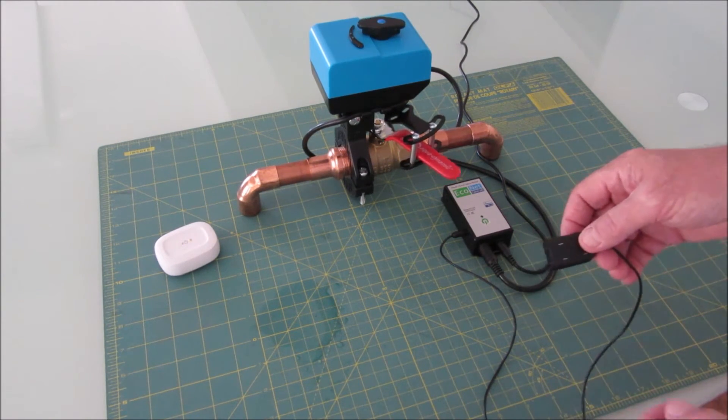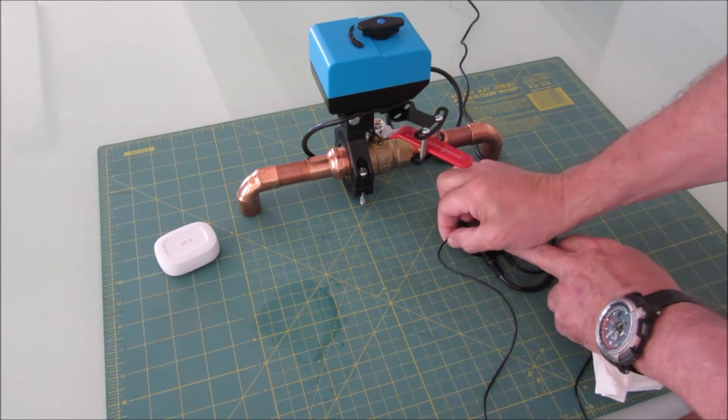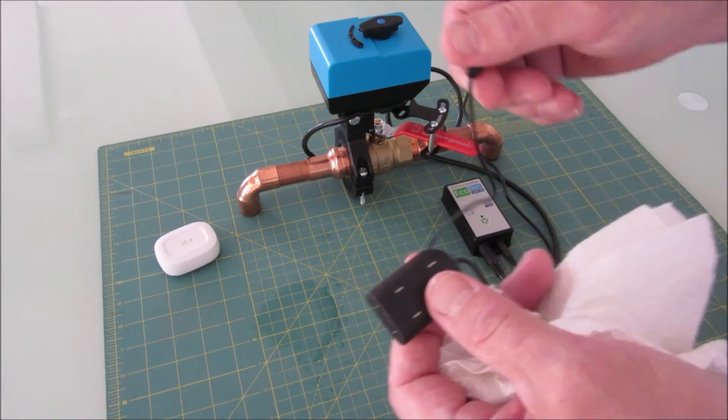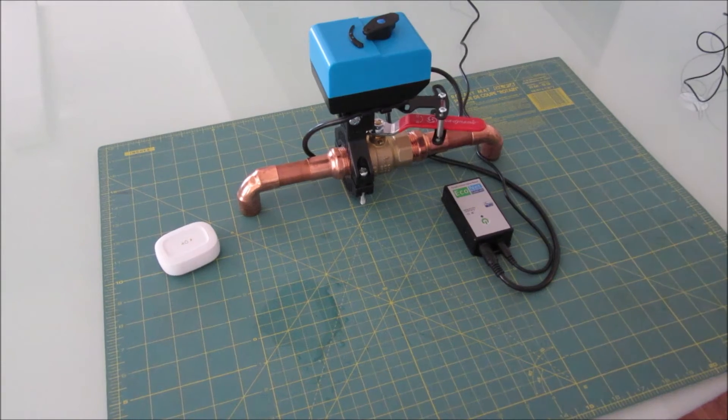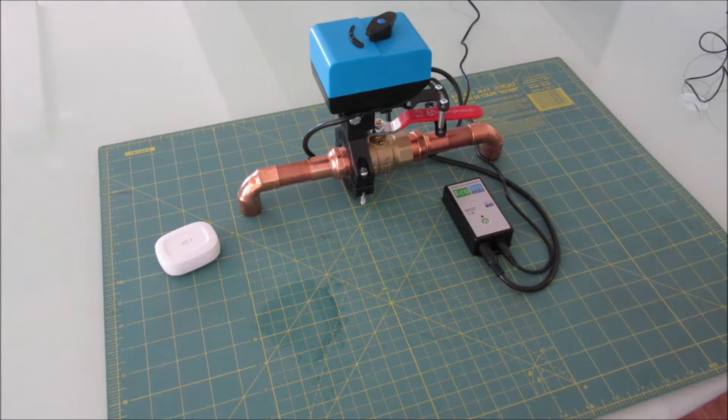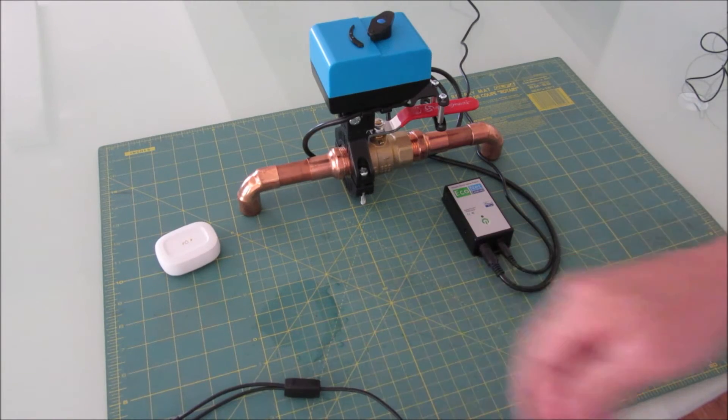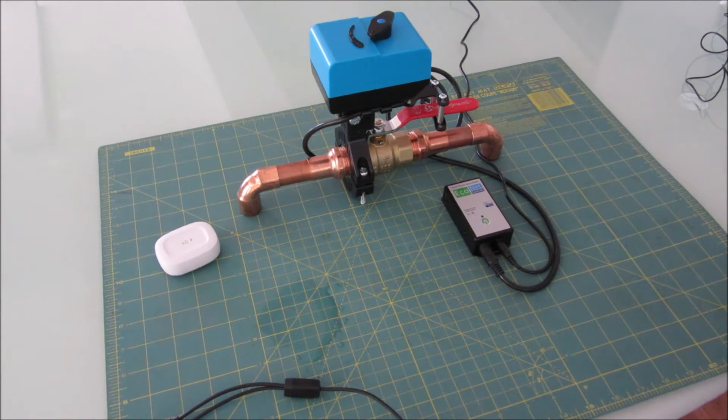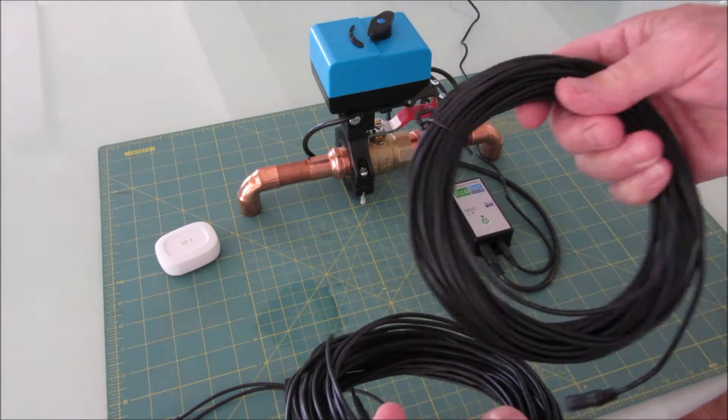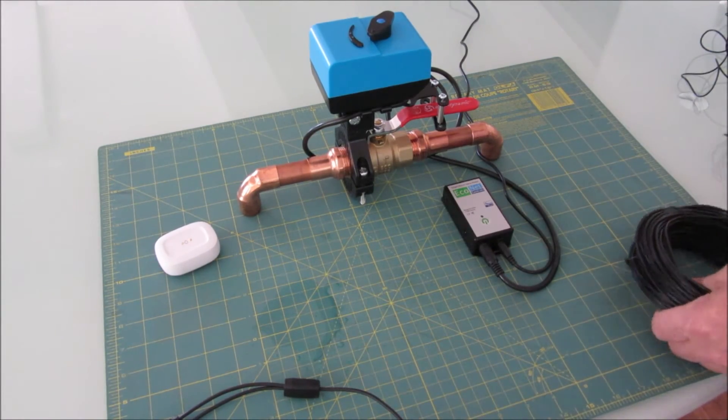And that's the first kit—just the leak sensor on its own. We also offer a kit with a splitter and a couple of extension cables, and we include two leak sensors. I'll just show you how that works here.